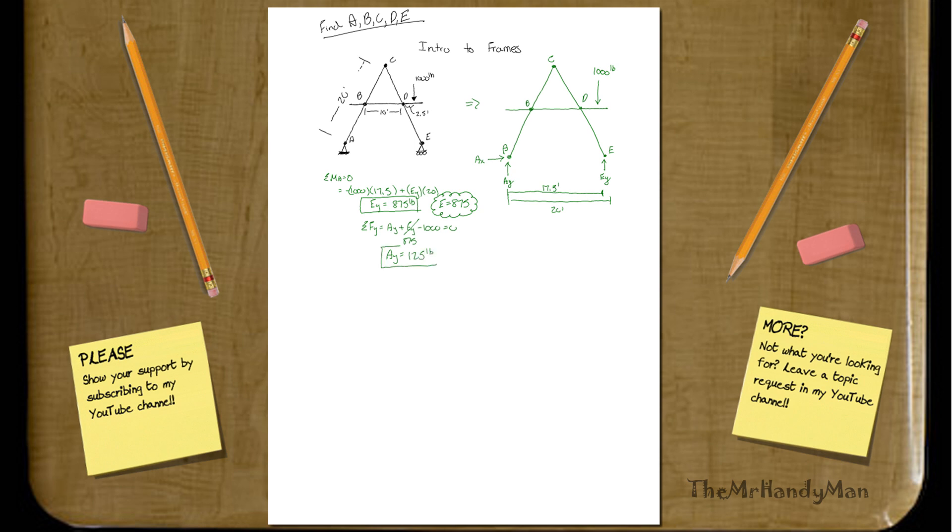So, this is just the Y component, remember that. For sigma F_X, we know that this all must equal zero, and the only component in our rigid body analysis that has an X component is A_X, so that must equal zero. So, if we combine the two components, you find that the reaction or the resulting force at A is 125 pounds.